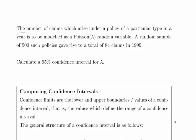A random sample of 500 such policies—that's a large sample, keep that in mind—gives rise to a total of 84 claims in 1999. Calculate a 95% confidence interval for lambda. I'm going to break it up into small chunks.